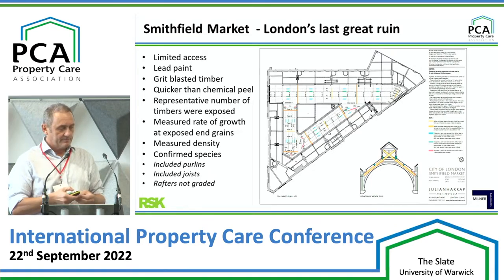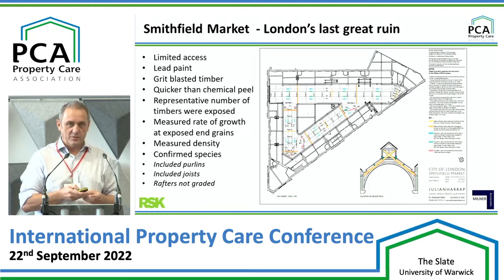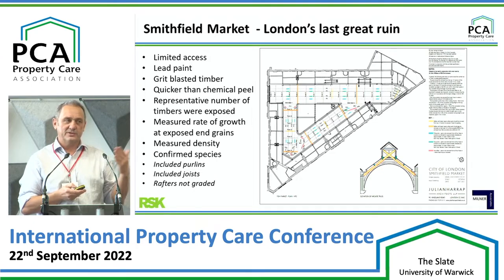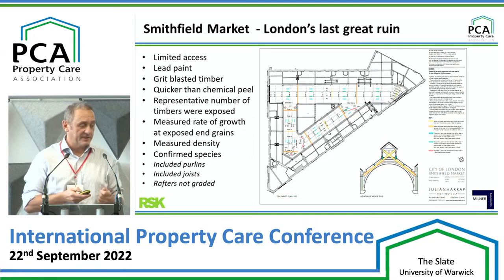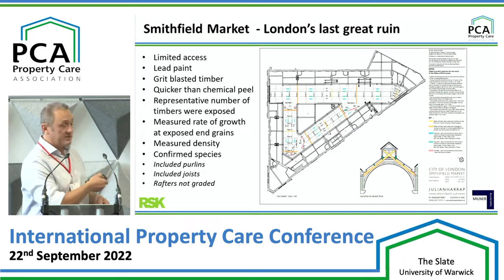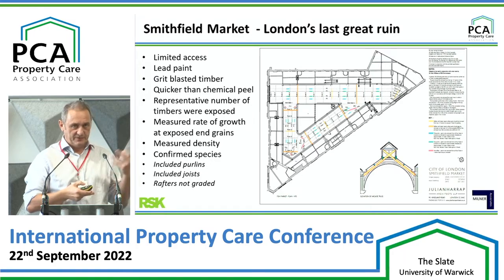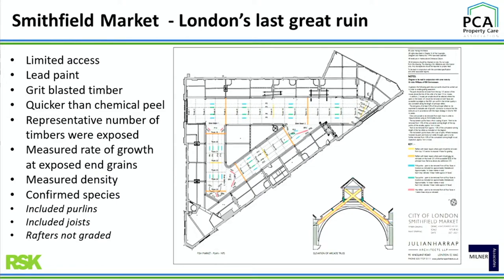We had limited access and there was also the issue of lead paint, which needed careful removal. We learned that grit-blasting timber is a lot quicker and easier than using chemical peel - with chemical peel there's always a chemical residue that affects subsequent coating. We looked at a representative number of trusses where we stripped the paint off, and also a representative number of timber peelings. We measured the density and confirmed the species. The density was quite surprising: the pitch pine trusses were up to about 800 kilograms per metre cubed, and even the European Redwood joists were around 550 kilograms per metre cubed - much higher than values given for characteristic densities from modern production forests in current standards.